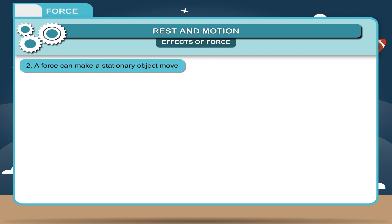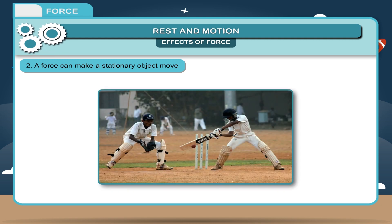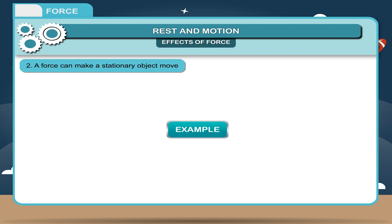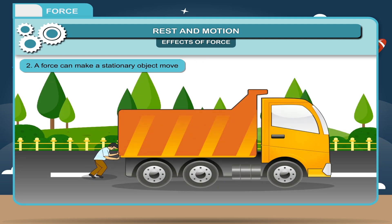A force can make a stationary object move. For example, when you hit a ball with a cricket bat, it moves. The force can increase the speed of a moving object if force is applied in the direction of motion of the object. However, it is not necessary that a force will always make a stationary object move. For example, if you push a heavy object like a bus or truck single-handedly, it will not move.